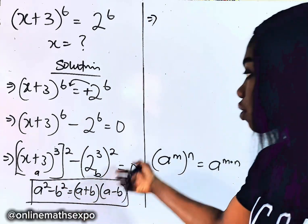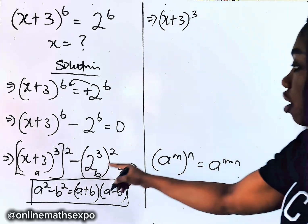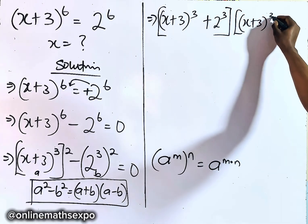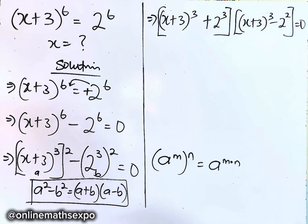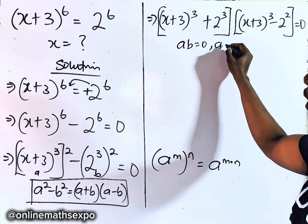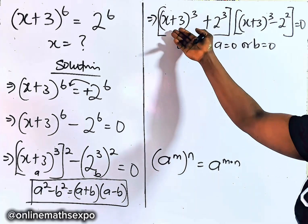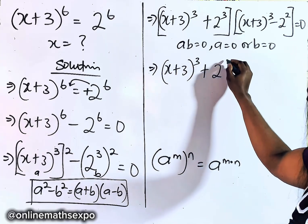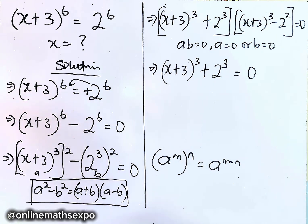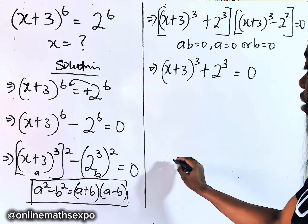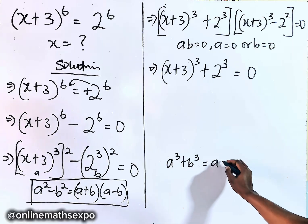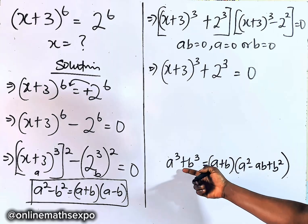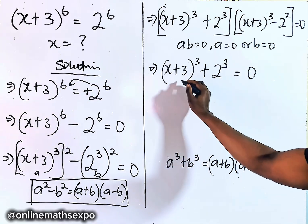Applying the difference of squares gives us [(x+3)^3 + 2^3] times [(x+3)^3 − 2^3] equal to 0. Now the first factor reminds you of the sum of two cubes: a³ + b³ = (a + b)(a² − ab + b²). This is your sum of two cubes, and that is what the first factor looks like. This is your a and this is your b.